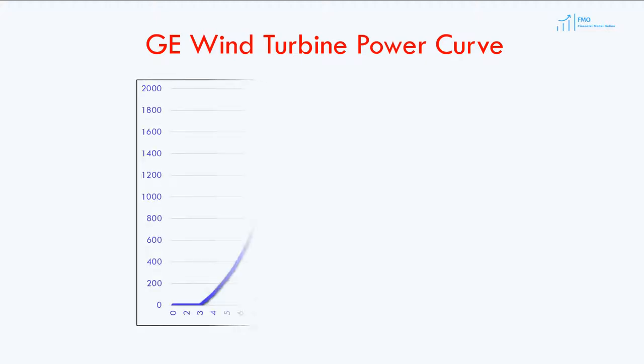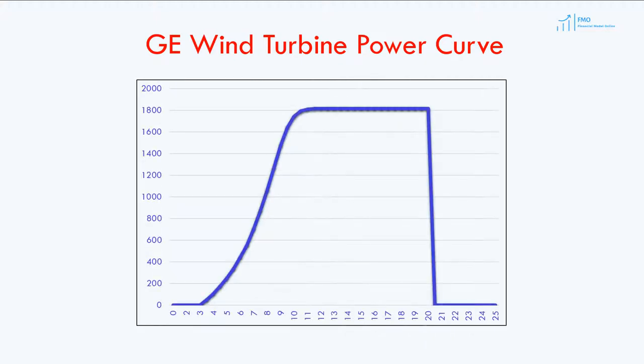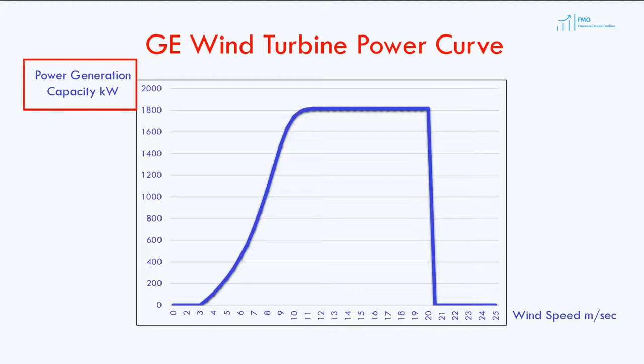Once wind data is ready, wind engineers combine wind data with the wind turbine's S-curve or power curve. The S-curve measures electrical energy output at different wind speeds. On the vertical axis, power generation capacity is given in kilowatts, and on the horizontal axis, wind speed is given in meters per second.